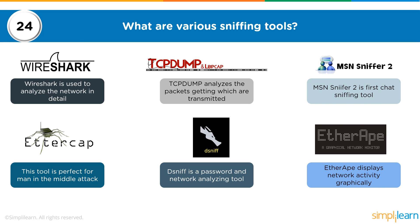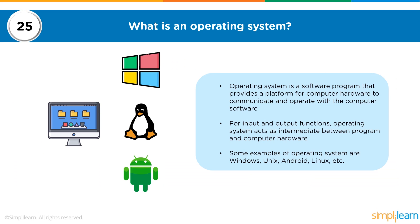The next question is: what is an operating system? We often describe what Windows, Linux, or Mac OS does, but an operating system is essentially a software program that provides a platform for computer hardware to communicate and operate with computer software. It is basically an enabler for human interaction with hardware. Without an OS, it's just hardware that cannot interact with you. When you install Windows, Linux, or Mac OS, you're installing an instruction set that allows you to interact with and manipulate the hardware.